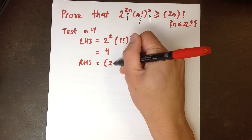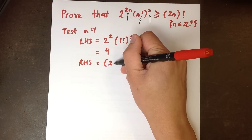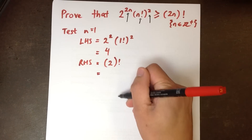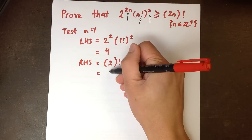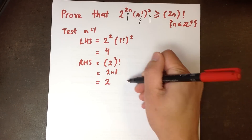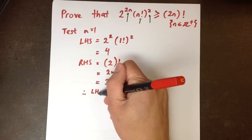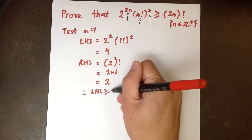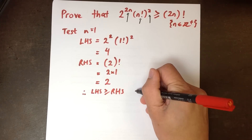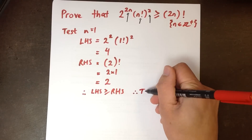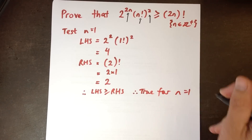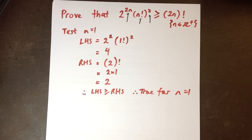The right-hand side is 2 times 1 factorial, which is 2 times 1 by definition, which is 2. So in this case, the left-hand side is greater than or equal to the right-hand side. Therefore it's true for our first allowable value, which is always a good sign.